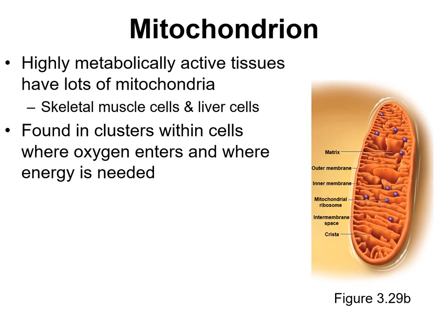You find lots of mitochondria in very active, metabolically active cells and tissues. For example, long-distance runners or bikers have skeletal muscles teeming with mitochondria. Liver cells, which are involved in detoxification, are very metabolically active and also contain large amounts of mitochondria. Even within cells, where there's a particular need for energy in one area, you'll find mitochondria clustered in those areas — you really find them where there's a need for ATP or energy.